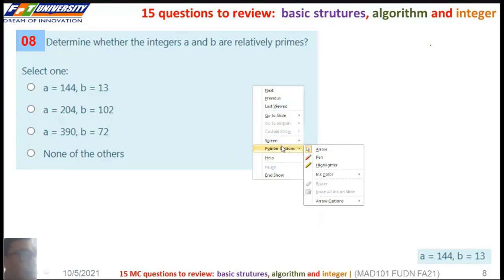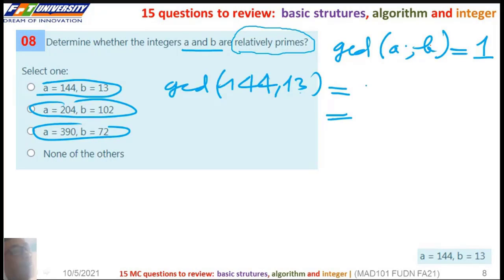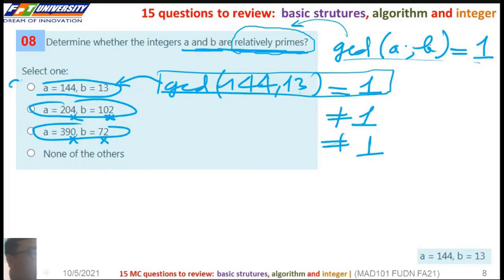So the next, determine whether the integers A and B are relatively prime. It means GCD of A and B is 1. I think this is 1. It's an even number so the GCD is not 1. These are two even numbers, so this is the correct answer.